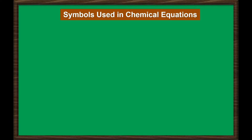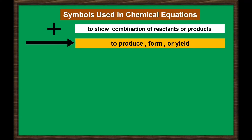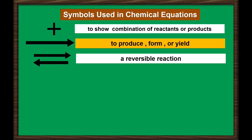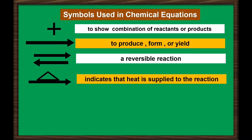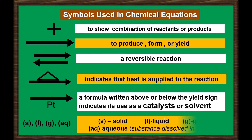The reactants and products in a chemical reaction can be written in a chemical equation. These are the symbols used in writing chemical equations: the plus sign shows combination of reactants or products; an arrow means to produce, to form, or to yield; two arrows in opposite directions mean it is a reversible reaction; a delta symbol placed above an arrow indicates heat is supplied; a formula written above or below the yield sign means a catalyst or solvent was used; and symbols written beside reactants and products — (s) means solid, (l) means liquid, (g) means gas, and (aq) means aqueous, meaning the substance is dissolved in water.